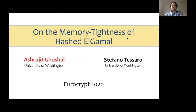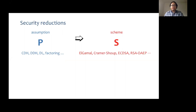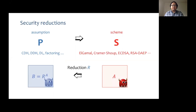Hi, this is joint work with my advisor Stefano Tessero. Very broadly, this work is about a memory lower bound or a security reduction. As we all know, cryptographic security proofs show that given a particular computational assumption P, a scheme S is secure. This usually means that we show how to transform any adversary A that breaks the security of S into an adversary B that violates the computational assumption P by giving an explicit reduction R.